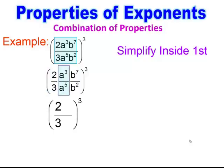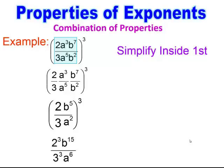I look at the next piece — the higher exponent is on the bottom, so I subtract and it stays on the bottom: a squared on the bottom. The next piece has the higher exponent on top, so I subtract and leave it up top: b to the 5th on top. Now that it's simplified, I take the power on the outside and give it to everything inside, getting 2 to the 3rd, b to the 15th power, over 3 to the 3rd, a to the 6th power. Evaluating gives 8b to the 15th all over 27a to the 6th.